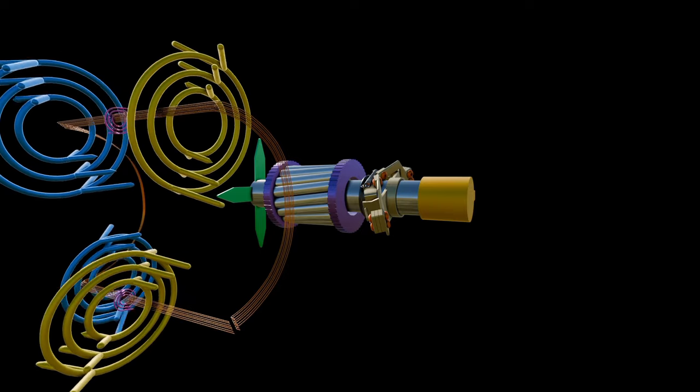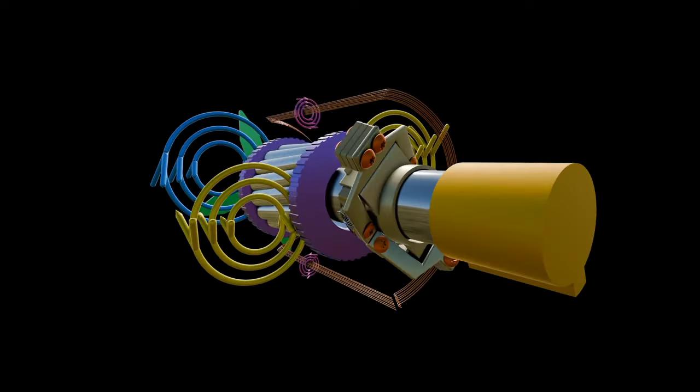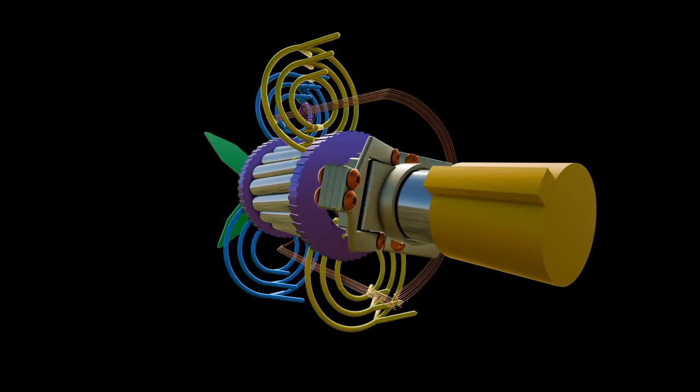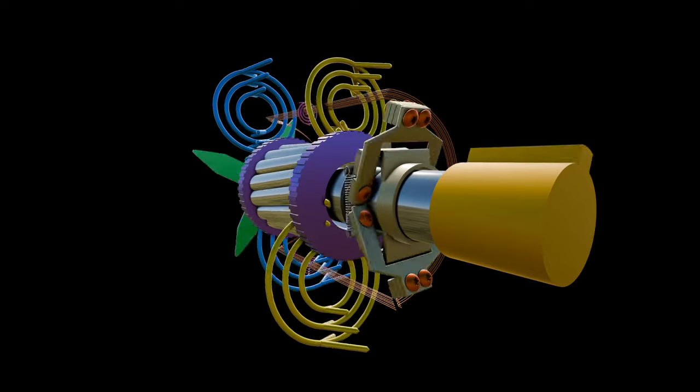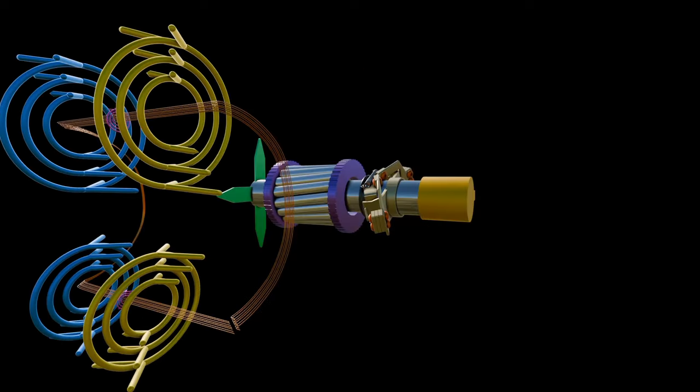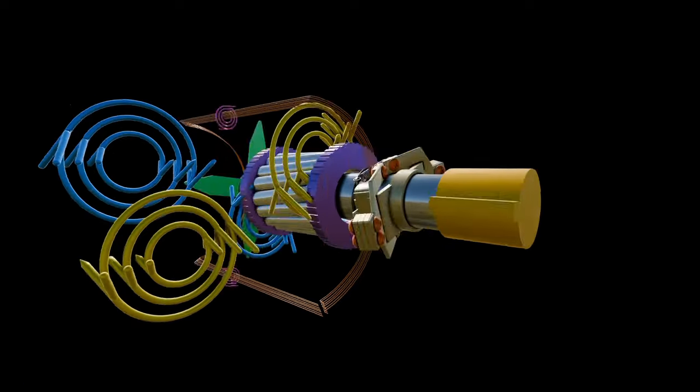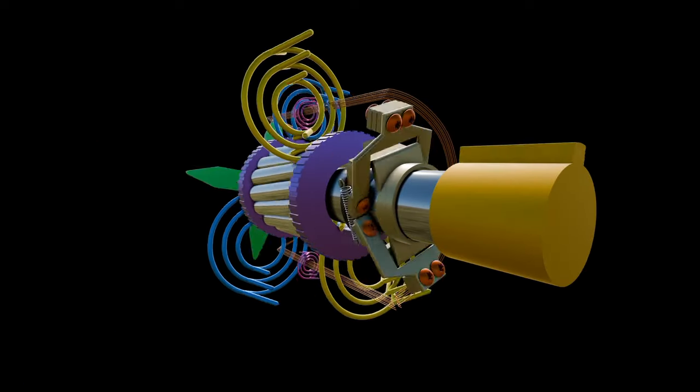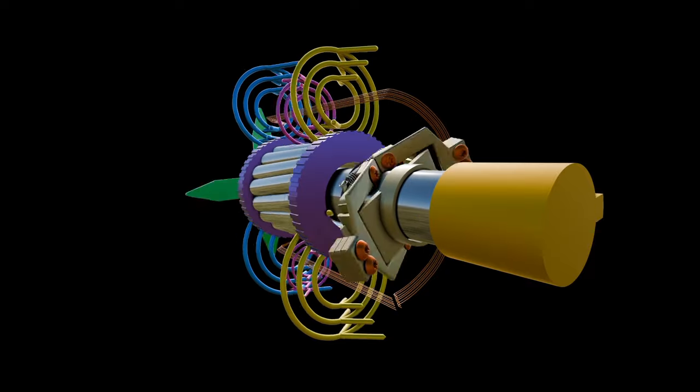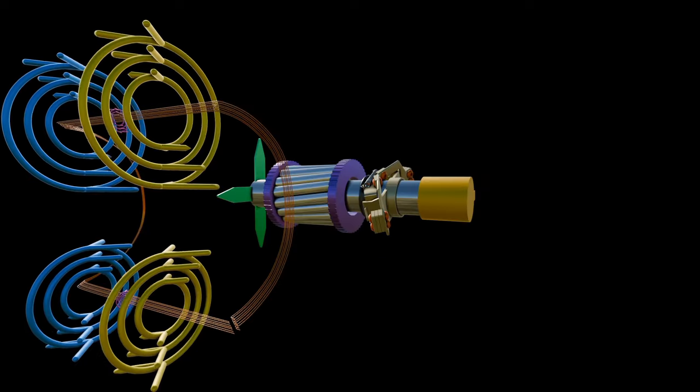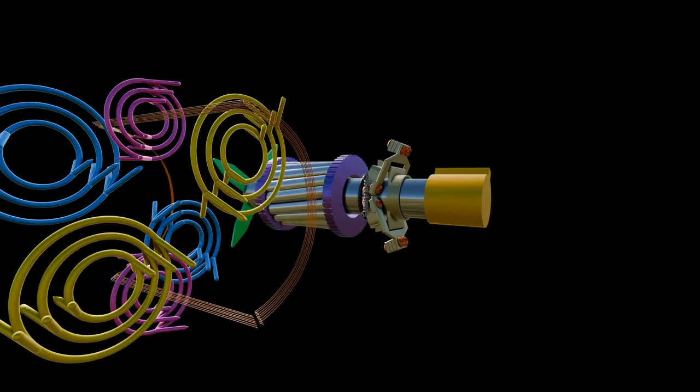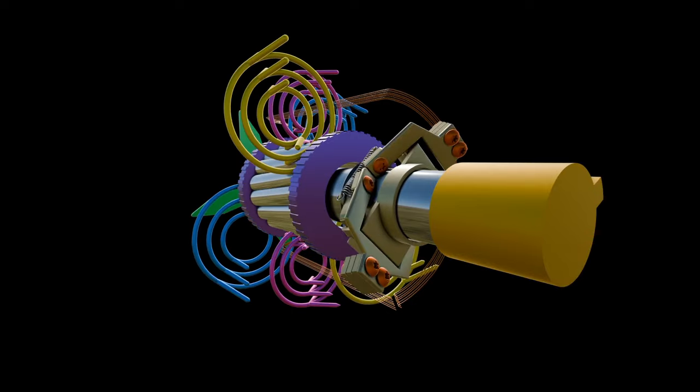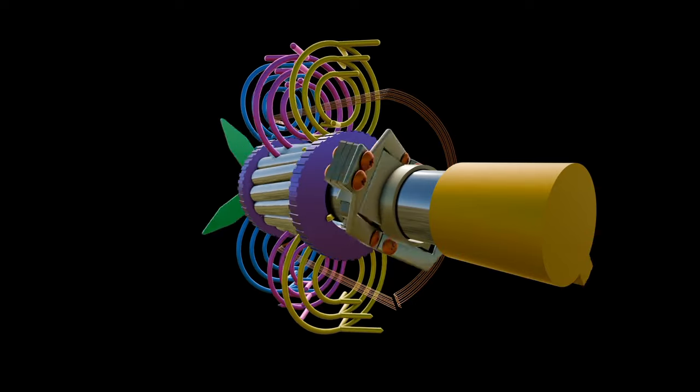When we provide a rotor with a slight rotation before it is placed between the field, it will rotate continuously. Hence, there is a requirement for the provision of initial motion to the rotor. And this can be done in many ways: through split phase, through capacitor start, through capacitor start capacitor run, through permanent capacitor, and through shaded pole.